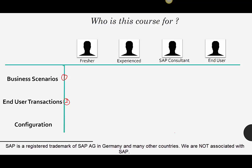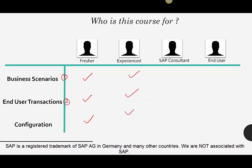In terms of who needs what: a fresher who wants to be an SAP consultant would need business scenarios first, since they're fresh out of college and wouldn't know how the material management procurement system works. They also need to be taught end user transactions, because once you understand the business scenario you need to be able to execute it in the system. And on top of that, they need to understand how to configure the system. So a fresher, an experienced consultant, or an SAP consultant from another module would typically require all three things.